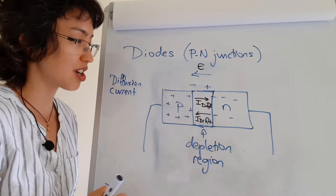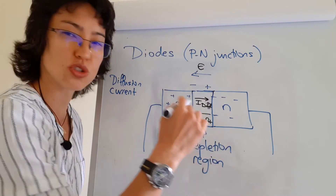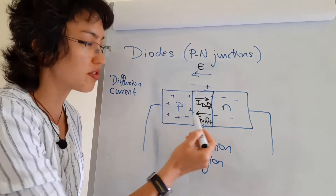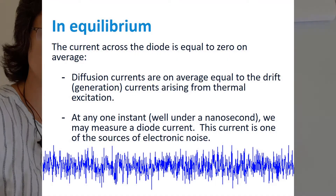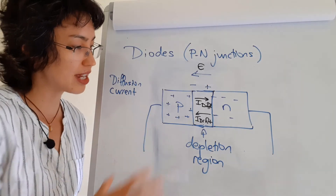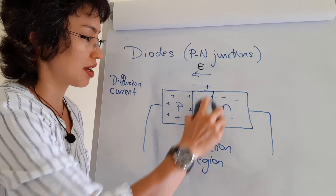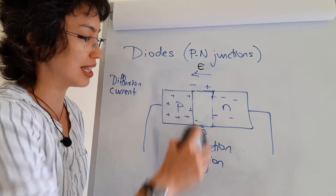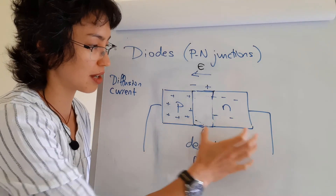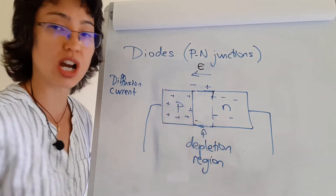So this is the equilibrium position for a p-n junction. You end up with a p-type and n-type doped semiconductor with a depletion region in the middle and no net charge flow.